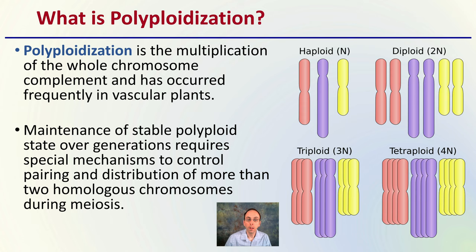As a quick biology review: your haploid refers to your gametes — in plants, these would be your egg cells or pollen grains. Diploid would be the normal organism. Here we're looking at polyploidization: the 3N triploid or the 4N tetraploid — multiple copies beyond what would be considered normal. The maintenance of a stable polyploid state over generations requires specific mechanisms to control pairing and distribution of more than two homologous chromosomes during meiosis.